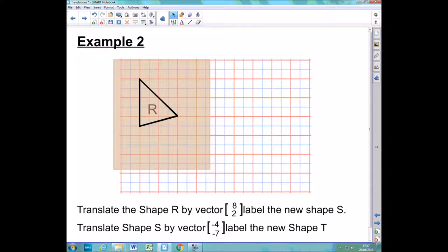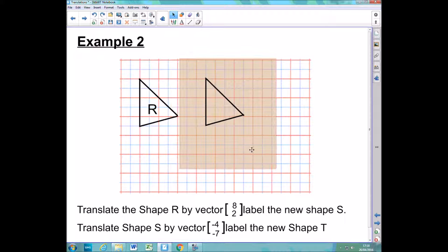And now all I need to do is interpret this vector down here. So the question is asking me to translate the shape R by vector 8, 2 and label this new shape S. So now I'm going to move it eight to the right. So it's one, two, three, four, five, six, seven, eight.